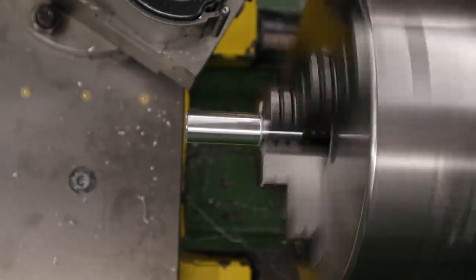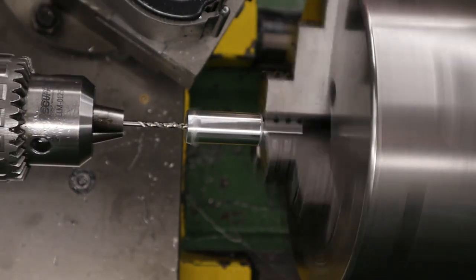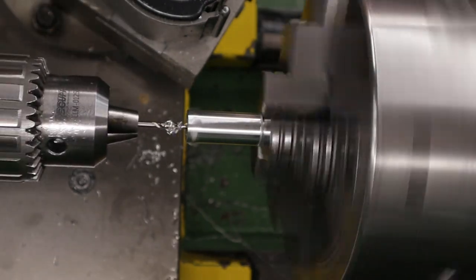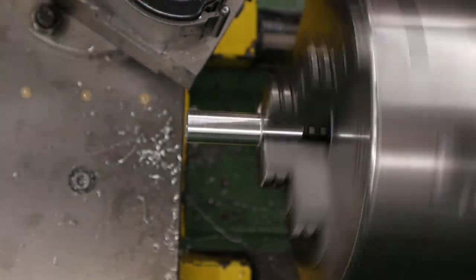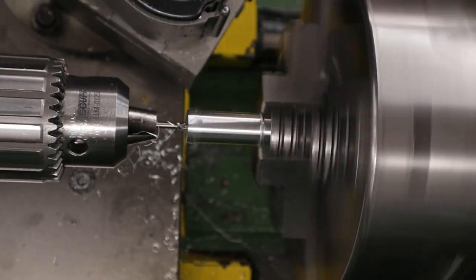Once that's done we can drill through the centre of the material and this will be the hole that locates on the trigger pole fitted to the rifle. We're coming through with a 2.5mm drill bit first and then opening it out to 3mm.